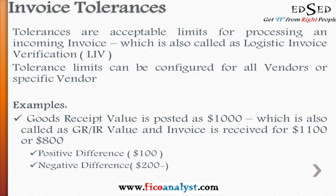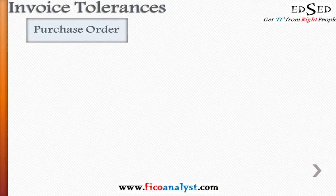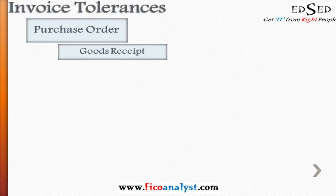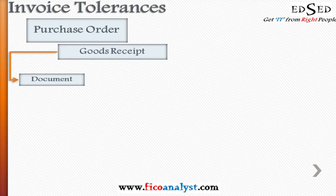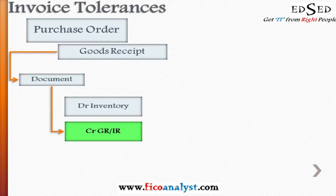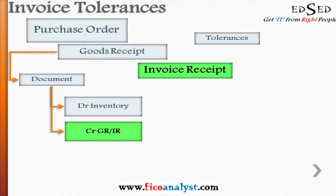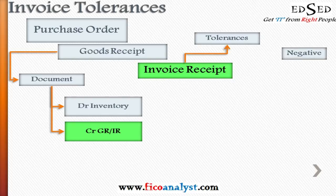We configure the system to accept or reject invoices at particular limit levels. When a purchase order is created and goods are received from the vendor, you post a document debiting inventory and crediting the GR/IR account. Once the GR is complete and you receive the invoice from the vendor, the configured tolerances for that vendor will begin to apply — whether negative or positive — and the limit will be checked.